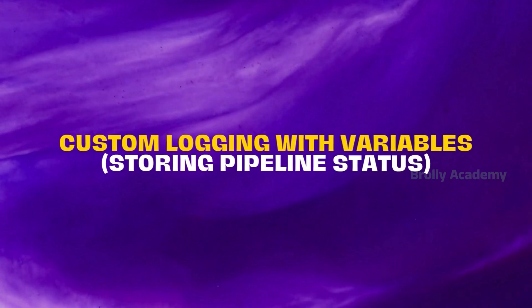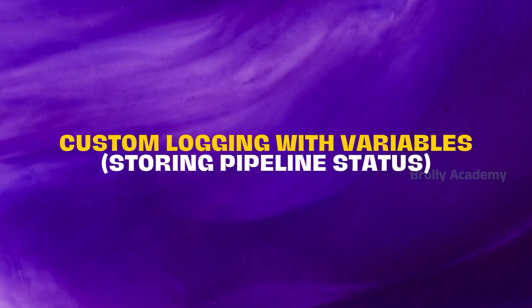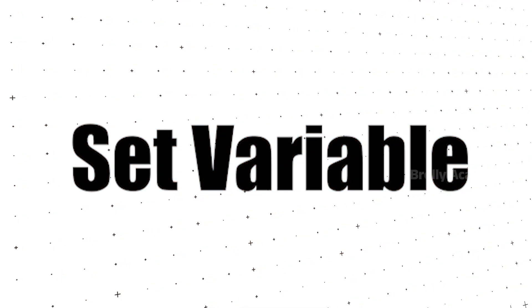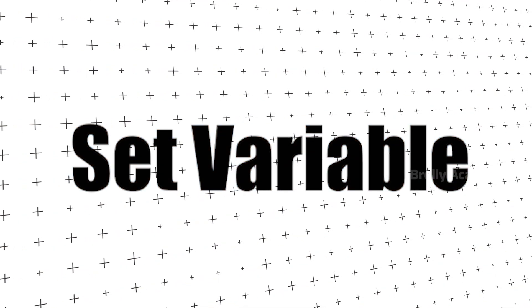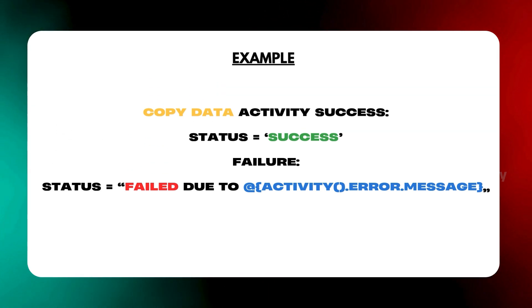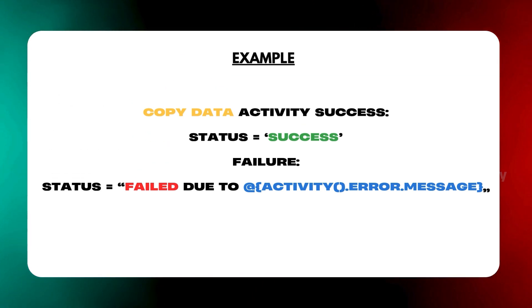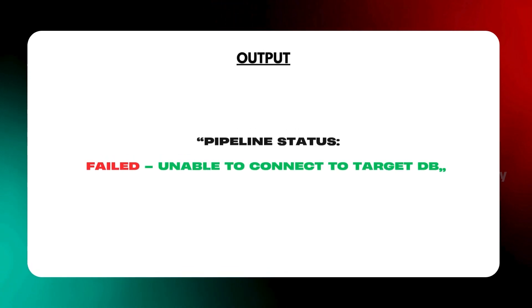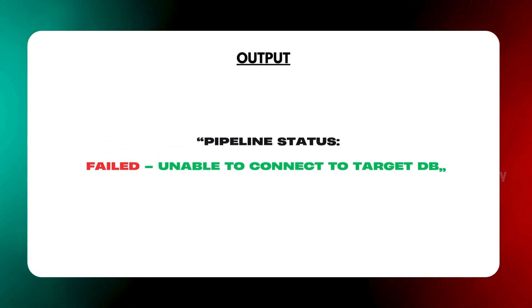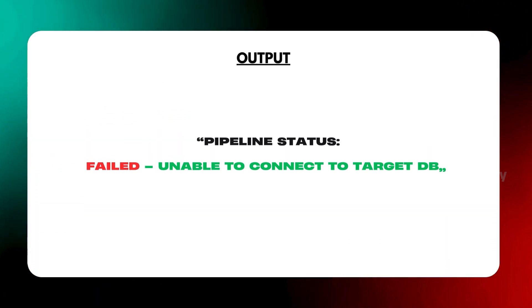Next, Custom Logging with Variables. You can store the pipeline status in a custom format using Set Variable Activity to store the success or failure status. For example, the pipeline status failed with message: 'Unable to connect to target DB.' This is a meaningful manual explanation for the user and can be included in a final report or later notification.